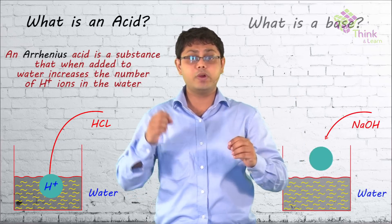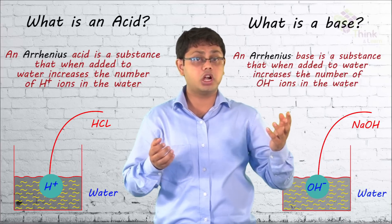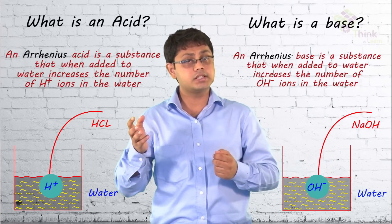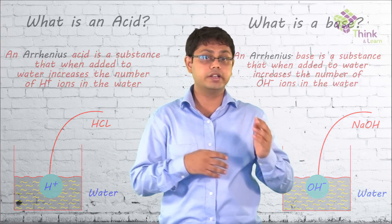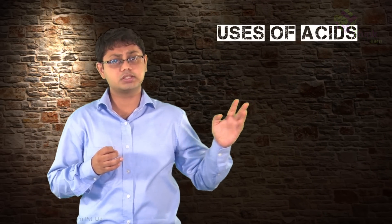When a particular substance, when dissolved in water, produces OH- ions, it is called a base. All bases that follow this are called Arrhenius bases. Before we look into the properties, we first need to understand how these acids and bases are useful to us.